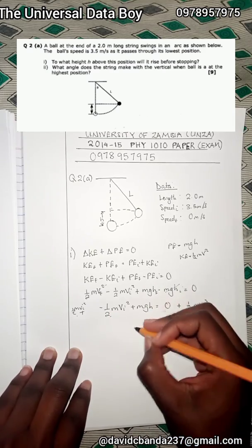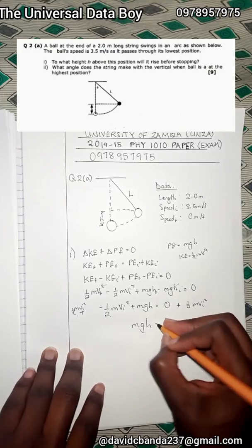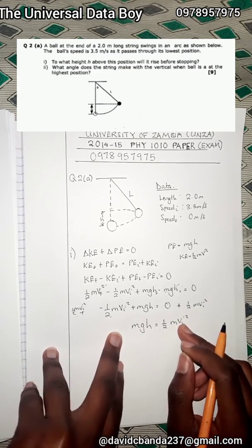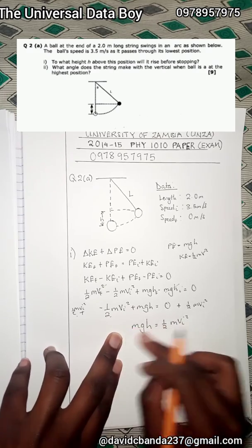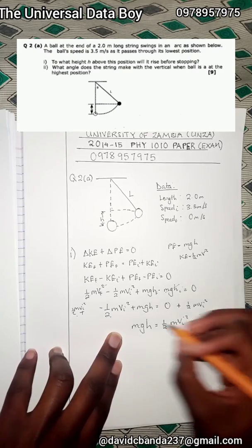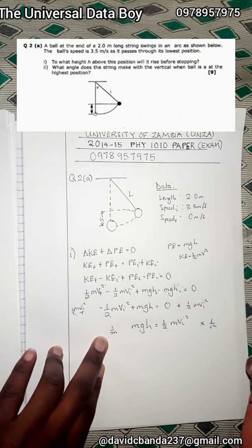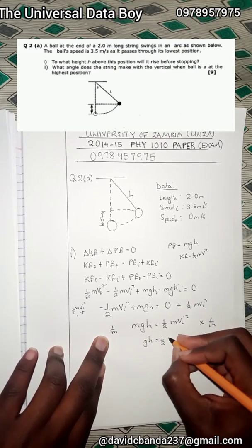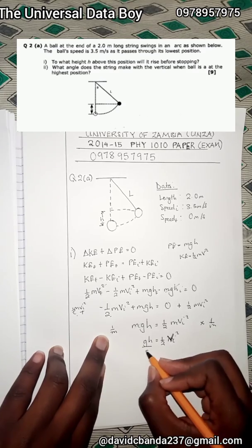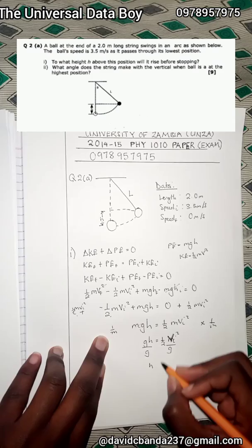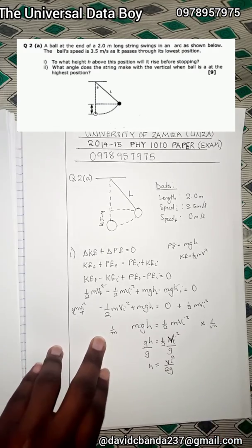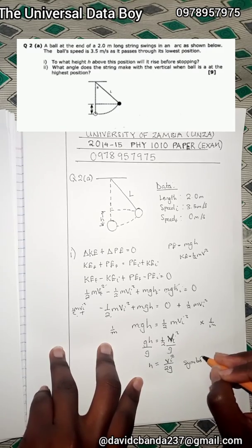Taking the ½mv_i² to the other side and dividing both sides by m — the masses cancel — we get: gh = ½v_i². Dividing both sides by g gives us our symbolic answer: h = v_i² divided by 2g.